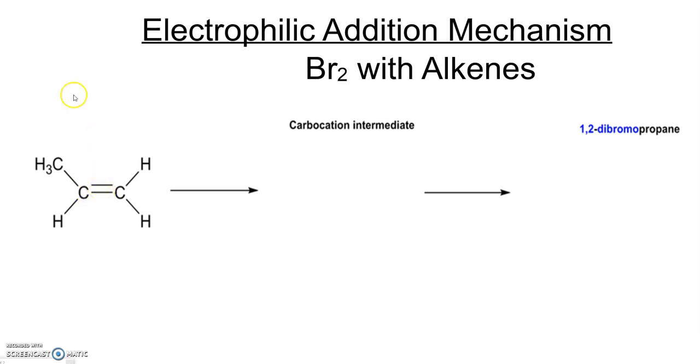An electrophile is something that is an electron acceptor. So what we're going to do first of all is draw our electrophile, our electron acceptor which is bromine. It's a rather large bromine molecule.